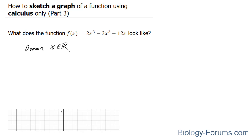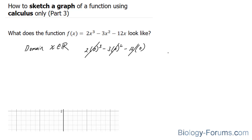The next important thing to do is find the y-intercept. We know the y-intercept occurs when x is equal to 0. Evaluating the function at x=0: 2 times 0 cubed minus 3 times 0 squared minus 12 times 0 all equal zero, so the y-intercept is equal to 0.